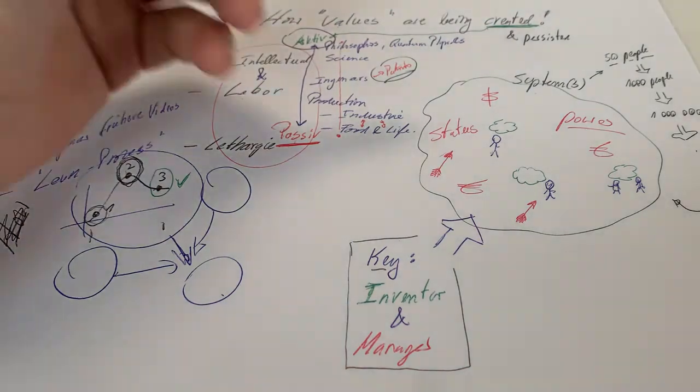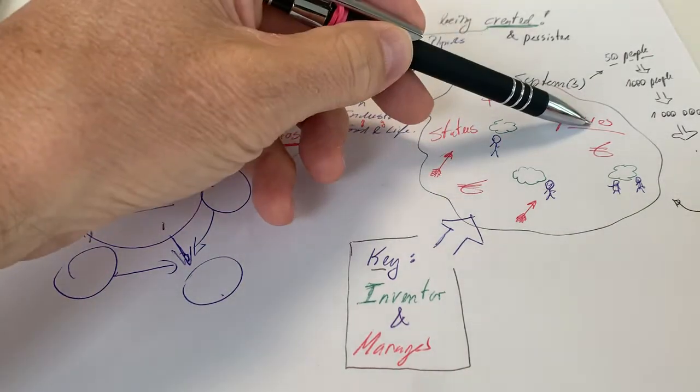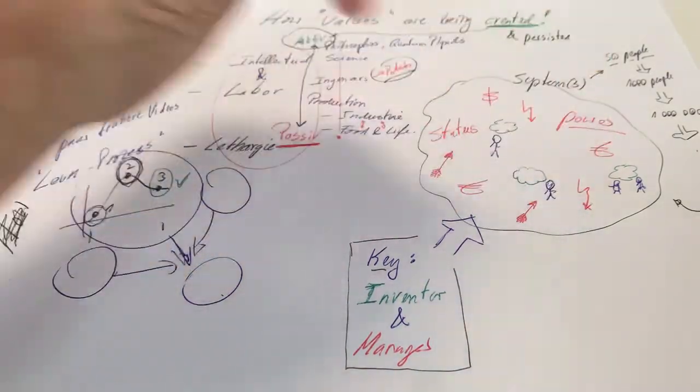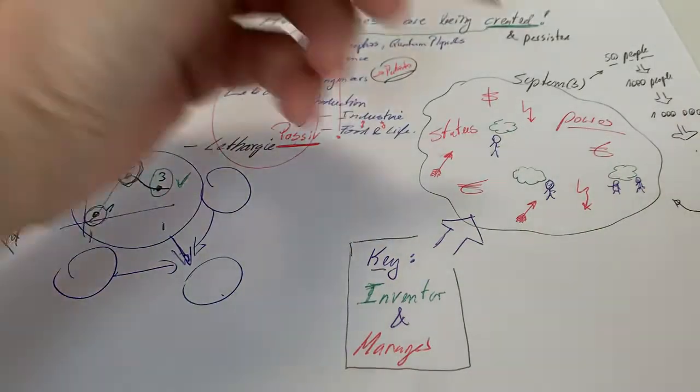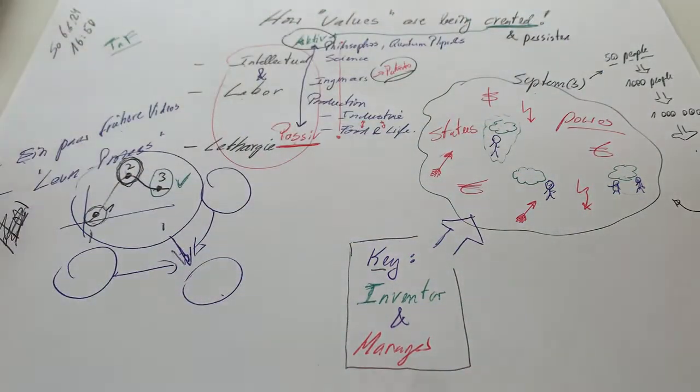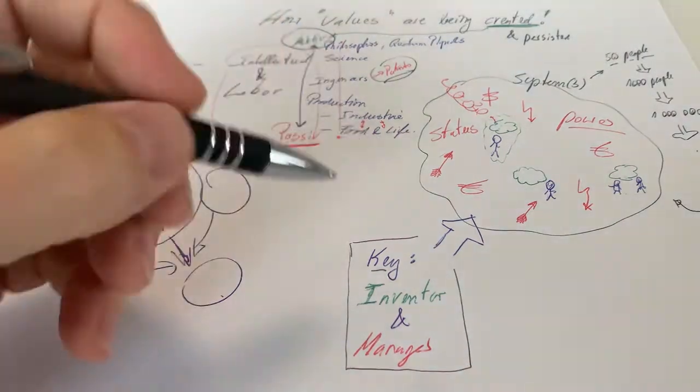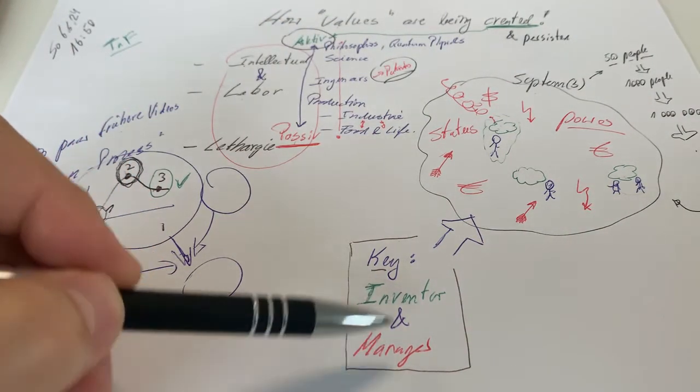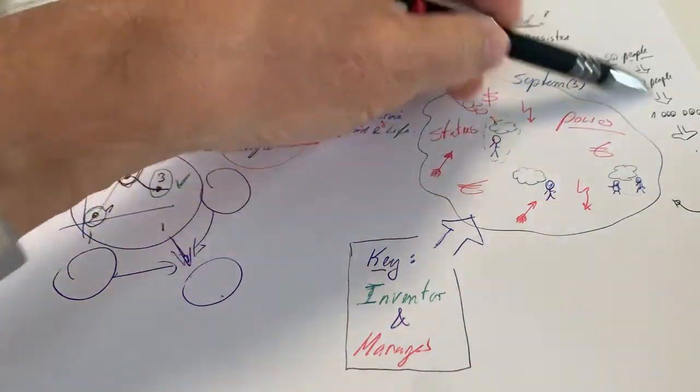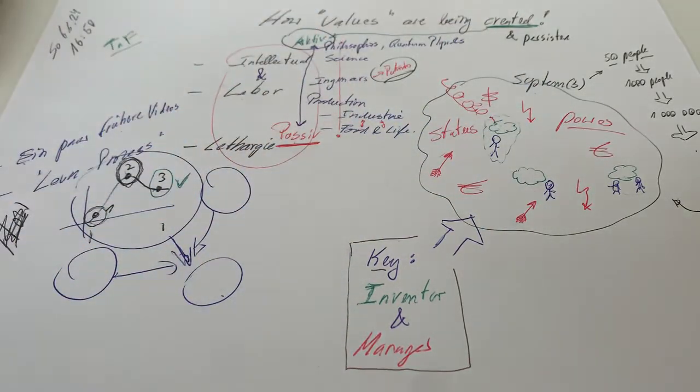I mentioned how values are, you need a system to create values. And this is kind of this system which I've done some videos on, is mainly based on power, status. It's violent, it's money-based, because money is power, money is status. Within this system you have little entities of people that have ideas and create something. And obviously at a certain point this idea is then taken into the system, and the system then multiplies it. This is kind of the key here, you have an inventor and you have a manager.